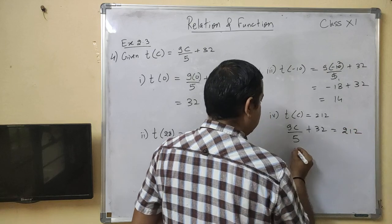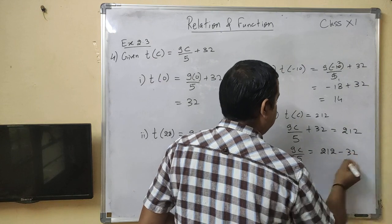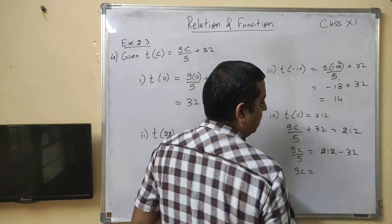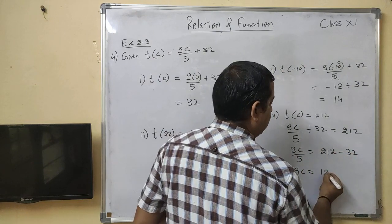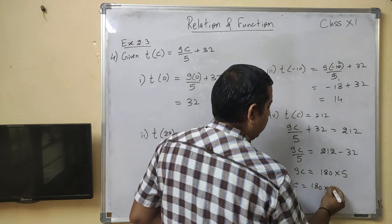So we have 9C upon 5 plus 32 is equal to 212. This gives you 9C upon 5 is equal to 212 minus 32. This gives you 9C is equal to 212 minus 32, you get 180 into 5.